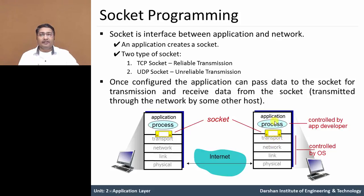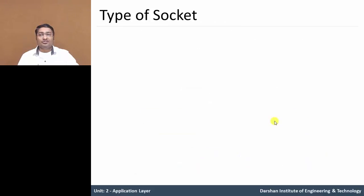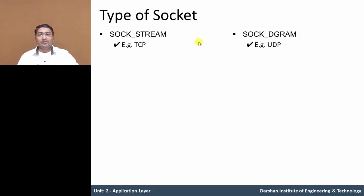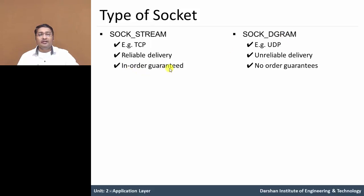There are two types of socket: SOCK_STREAM, which means TCP socket, and SOCK_DGRAM, which means UDP socket. When using TCP protocol, it gives reliable delivery. When using UDP protocol, it gives unreliable delivery. In SOCK_STREAM, delivery is in-order guaranteed, meaning data packets arrive in sequence in the proper manner. In SOCK_DGRAM, there is no order guaranteed in the data sequence.